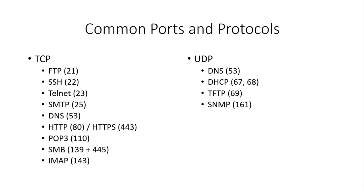We've also got TFTP on port 69, which is the Trivial FTP — it utilizes UDP instead of TCP. And we also have SNMP, the Simple Network Management Protocol. You'll encounter SNMP occasionally on networks, not always, but when you do there may be information to be gathered, especially if community or public strings are being used. We'll address that when we encounter it, but you'll probably see it again in this course.